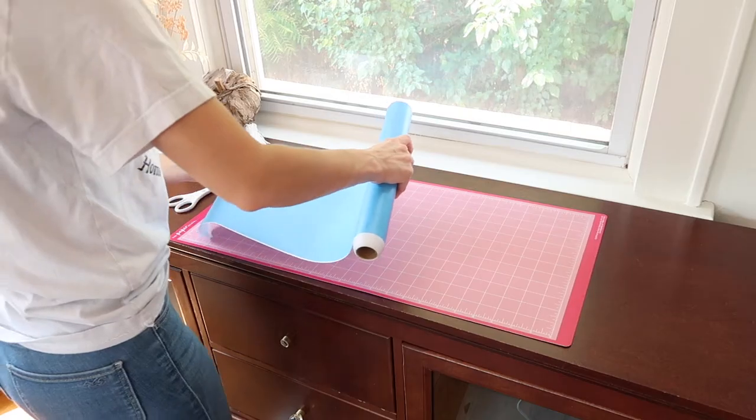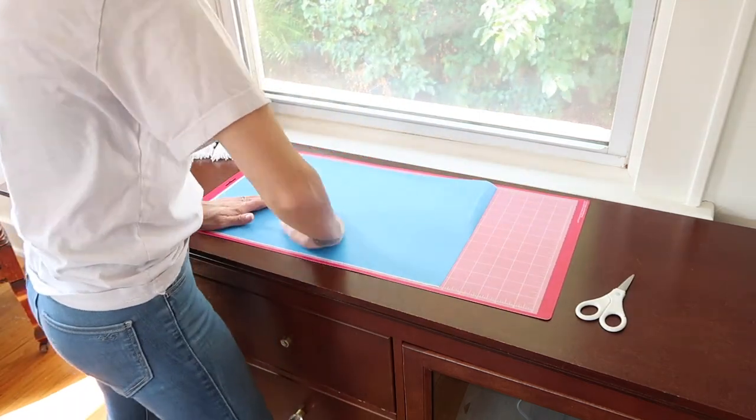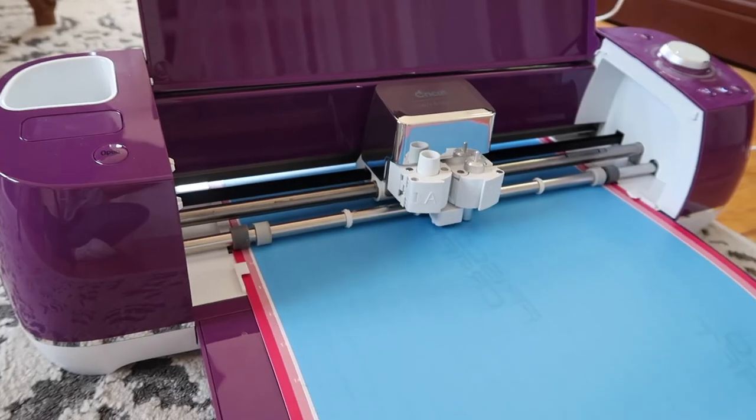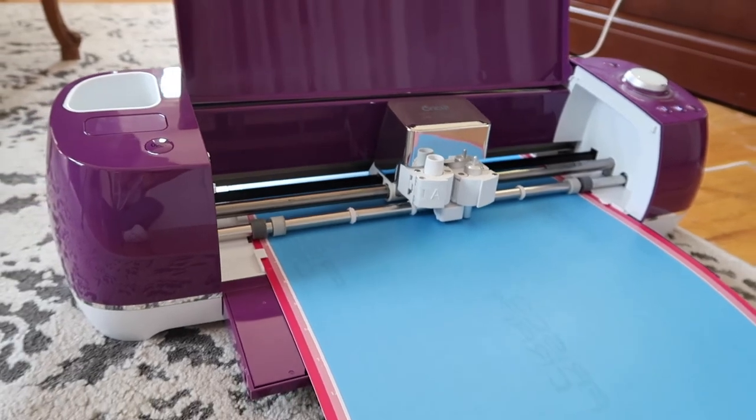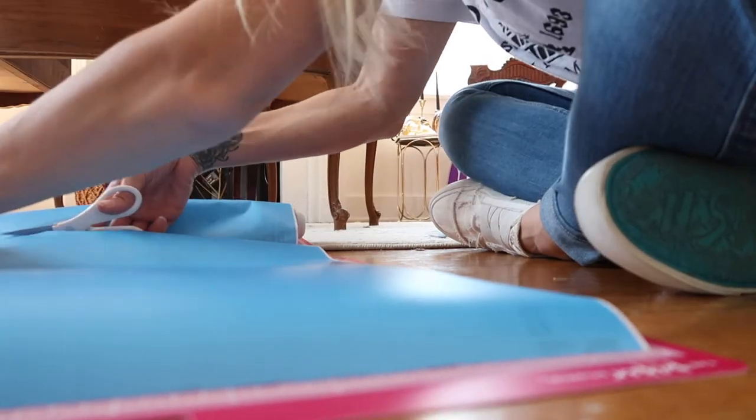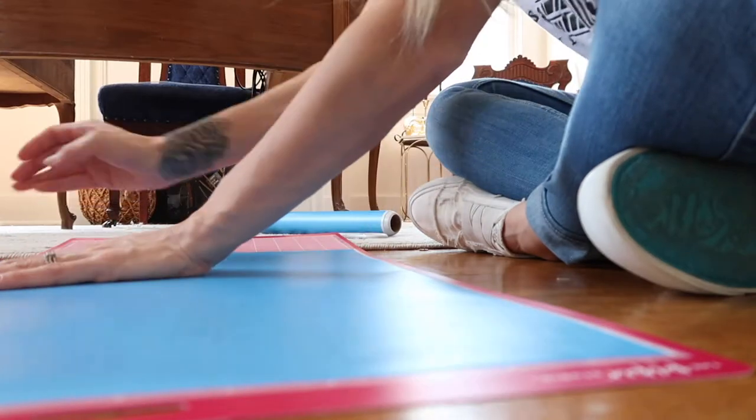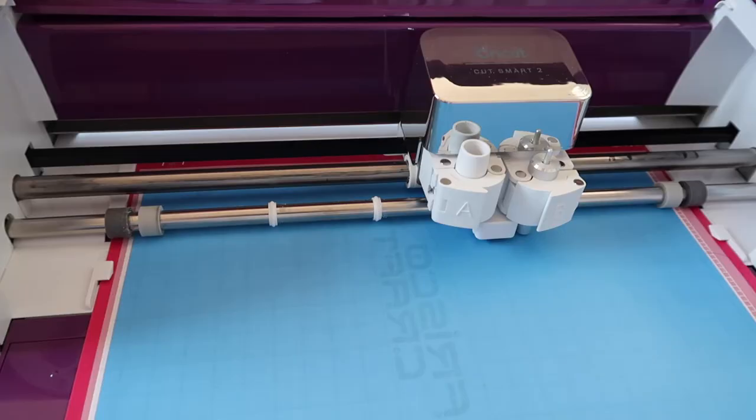I had my dial set to custom and then chose stencil vinyl. If you don't have a Cricut Explore Air 2, you don't have the custom dial, choose your vinyl setting. I believe that should work for you. I'm going to get my two mats loaded up and get to cutting.